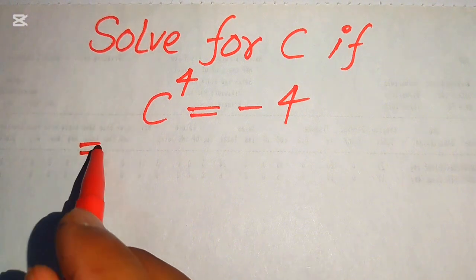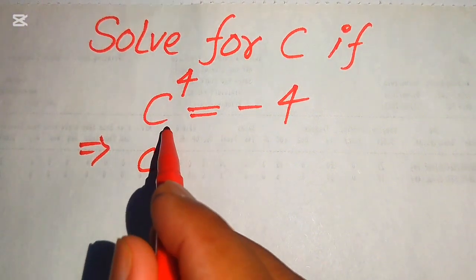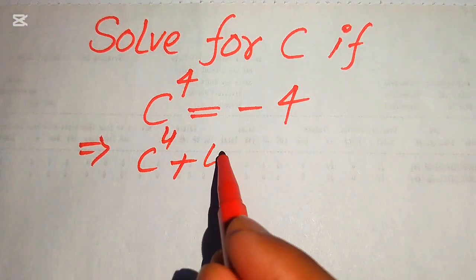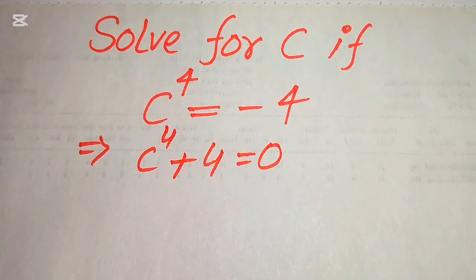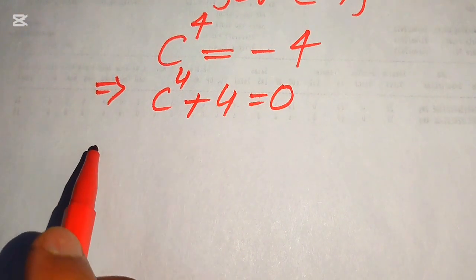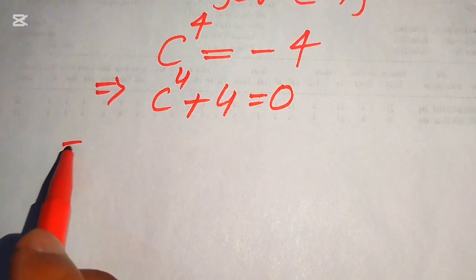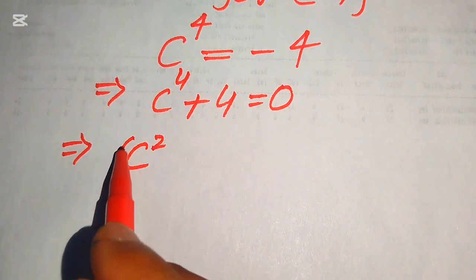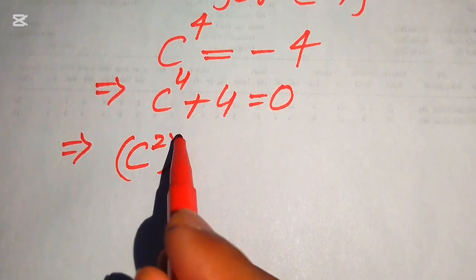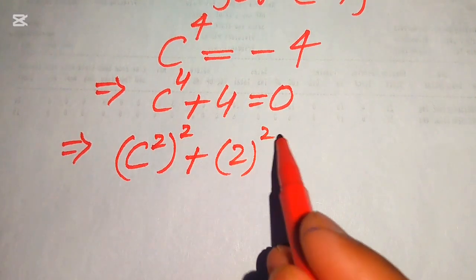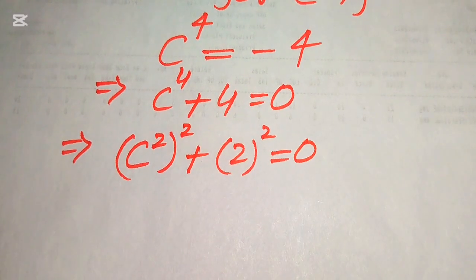First we need to move the term from the right hand side to the left hand side, and it will become c to the power of 4 plus 4 equals 0. In the next step, we rewrite this equation as c squared whole squared plus 2 squared equals 0.